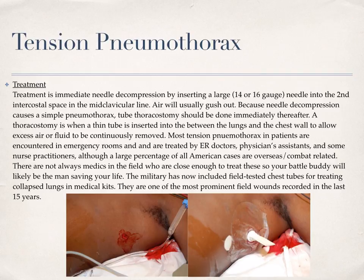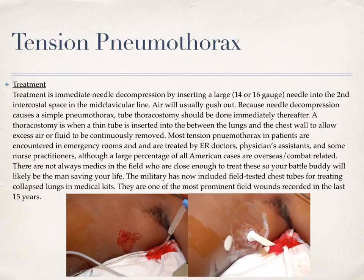Treatment is the immediate needle decompression by inserting a large bore 14- or 16-gauge needle into the second intercostal space in the midclavicular line. Because needle decompression causes a simple pneumothorax, a tube thoracostomy should be done immediately afterwards. A thoracostomy is when a thin tube is inserted between the lungs and the chest wall to allow excess air or fluid to be continuously removed.